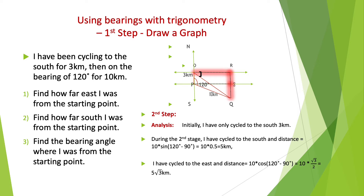Now let's write down the analysis. Initially, I have only cycled to the south 3 km. During the second stage, I have cycled further to the south, and the distance equals 10 × sin(120° − 90°) = 10 × 0.5 = 5 km.